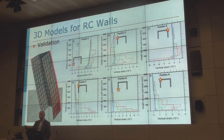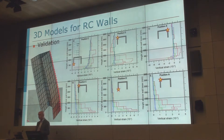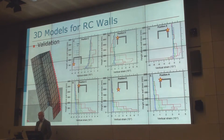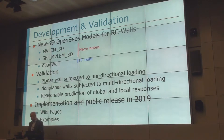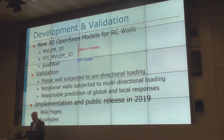We looked at the strain profiles in one of those U-shaped walls. It's difficult to capture strains accurately in reinforced concrete, especially for non-planar walls under multi-directional loading. Sometimes the measurements are made at the surface of the wall while our models are centerline models, so we need to make some progress there. In my mind, the results are acceptable, but obviously not perfect. To summarize this part: we developed two 3D macro models extending the existing models, and a quad wall finite element model validated against many specimens — unidirectional and multidirectional — and we're working on wiki pages and examples for OpenSees implementation.